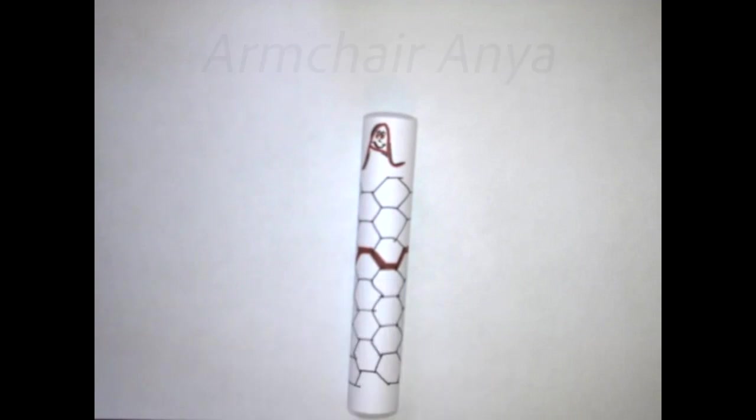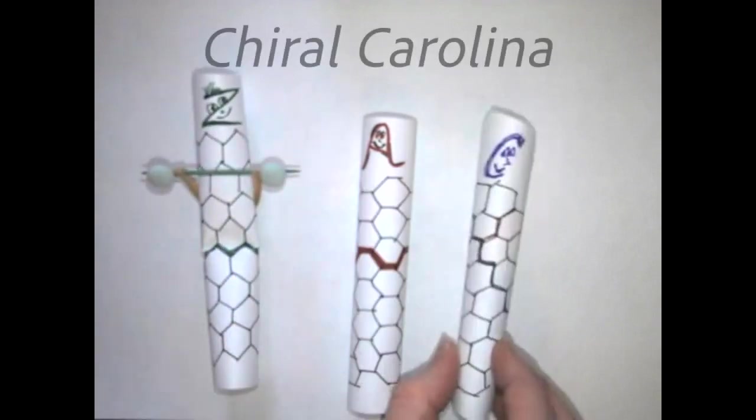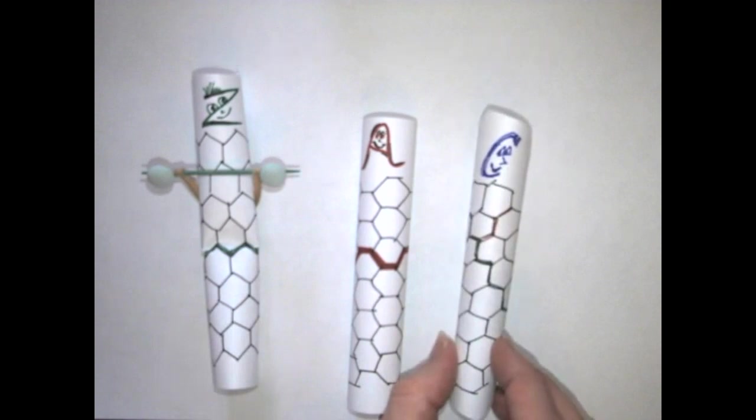Armchair Anya, Zig Zag Zane, and Chiral Carolina. You might notice that these puppets have a pattern on them. We're going to talk more about this pattern and how it gives Armchair Anya, Zig Zag Zane, and Chiral Carolina special abilities.